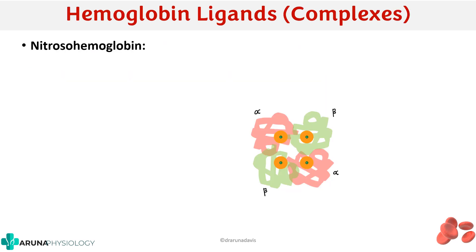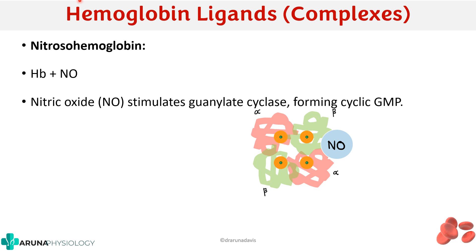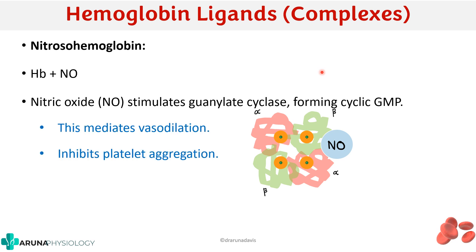Now, what are the different hemoglobin ligands or derivatives? The first example is nitrosohemoglobin — hemoglobin combined with nitric oxide. Nitric oxide stimulates guanylate cyclase forming cyclic GMP, which mediates vasodilation, inhibits platelet aggregation, and affects macrophage cytotoxicity. So whenever nitric oxide combines with hemoglobin, it stimulates cyclic GMP formation with these effects.